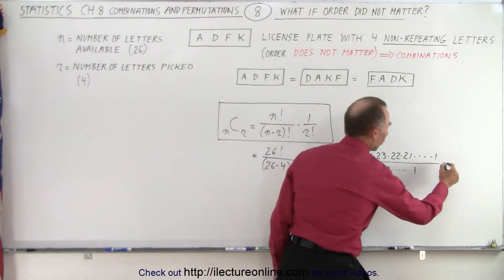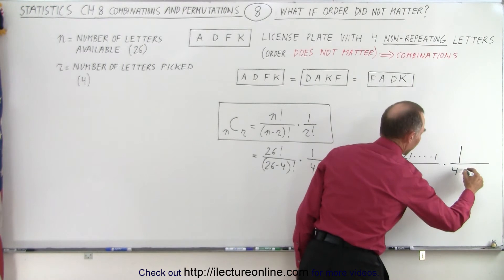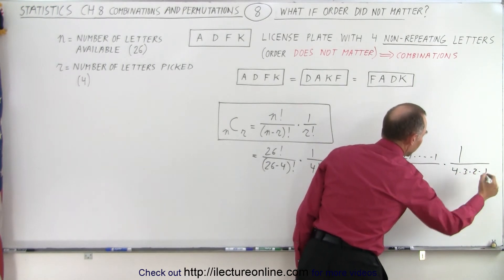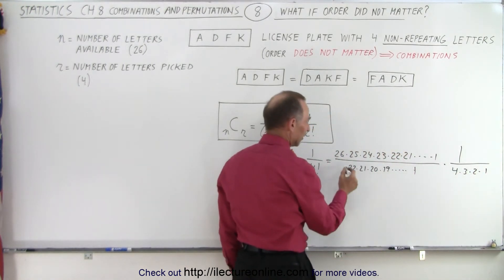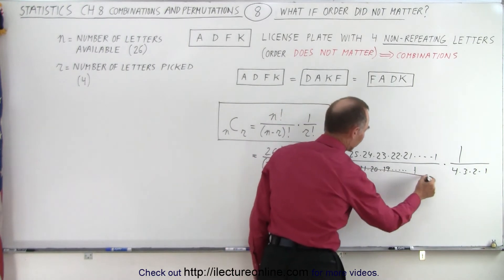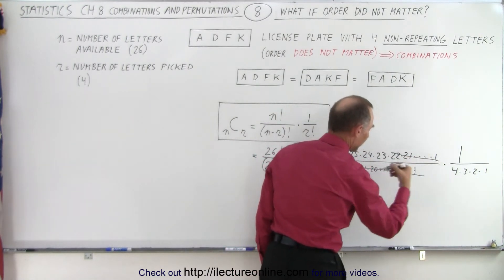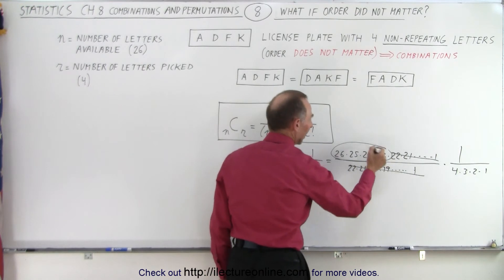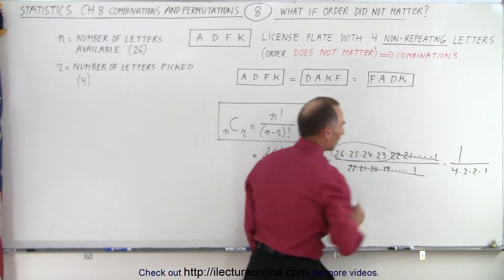And then we have 1 over 4 factorial which is 4 times 3 times 2 times 1. And notice that everything from 22 down cancels on top and bottom. So we have these four left and then these four in the denominator.